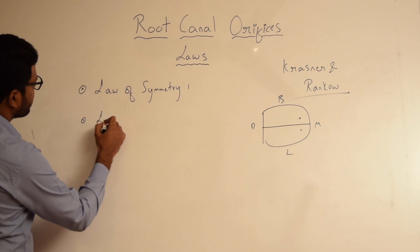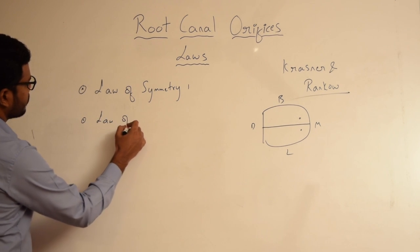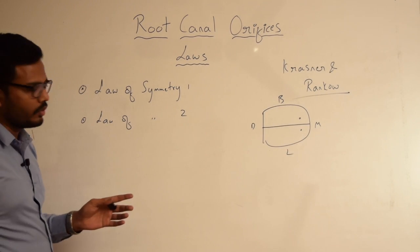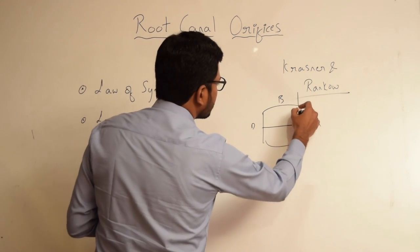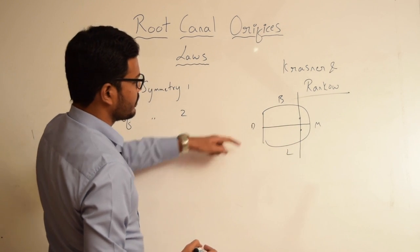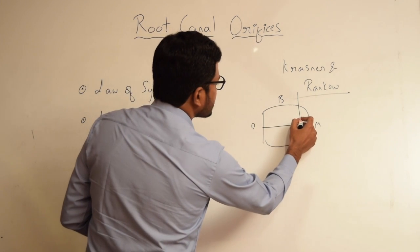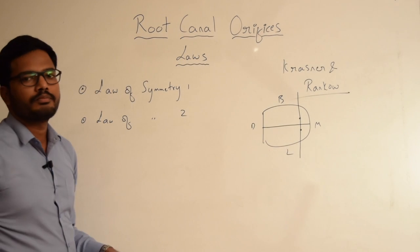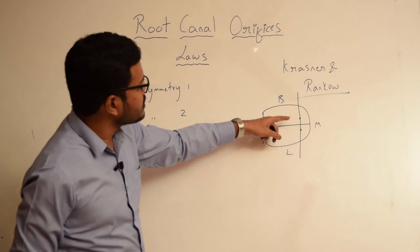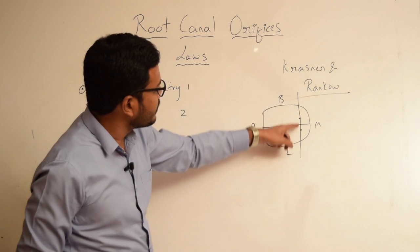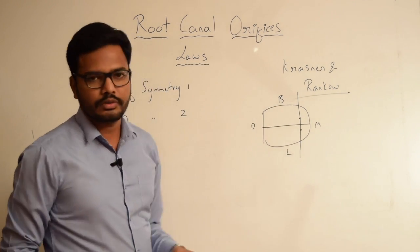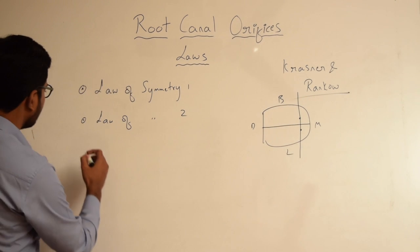And we have Law of Symmetry 2. According to this law, when we draw a line which is perpendicular to the mesodistal line, the canal orifices are located along this perpendicular line. So canals are located on a line which is perpendicular to the mesodistal line drawn in the center of the tooth.